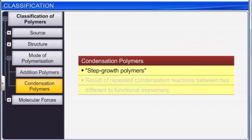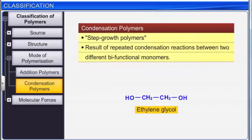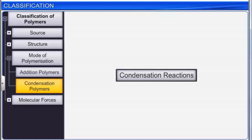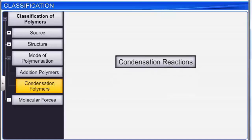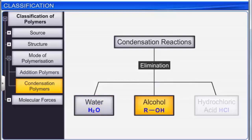Condensation polymers, or step-growth polymers, are the result of repeated condensation reactions between two different bifunctional monomers. Ethylene glycol is an example of a bifunctional monomer because it has two hydroxyl groups. The condensation reactions involve the elimination of small molecules such as water, alcohol, or hydrogen chloride.